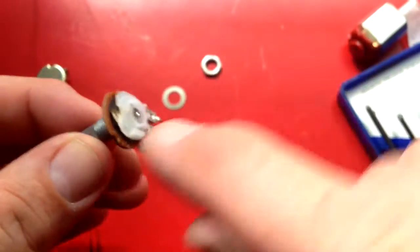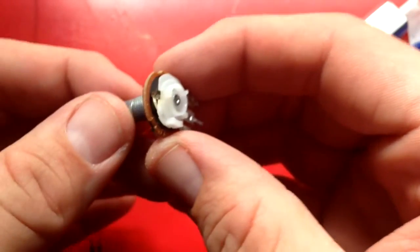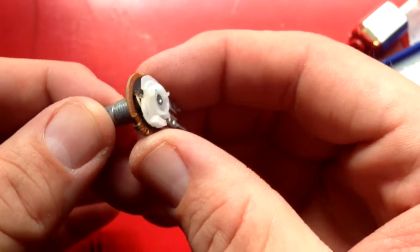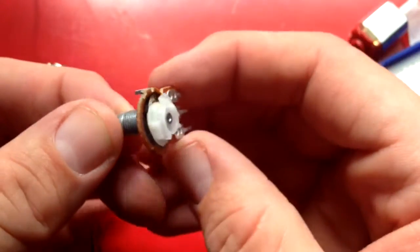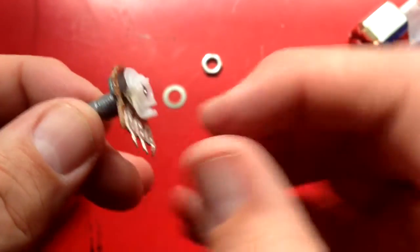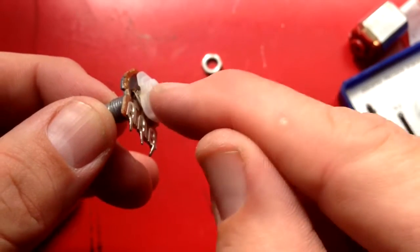You can see the little contacts here where it touches the black resistant part of the potentiometer, and it goes back and forth transferring the electricity from that contact to the center contact.